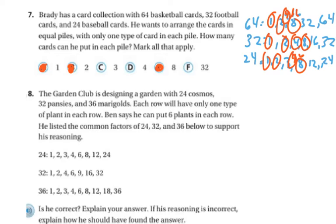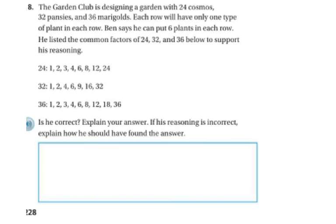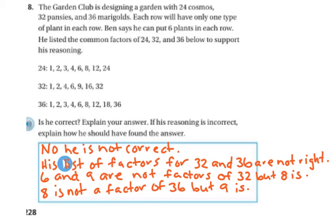The Garden Club is designing a garden with 24 cosmos, 32 pansies, and 36 marigolds. Each row will only have 1 type of plant. Ben says that he can put 6 plants in each row. He lists the common factors of 24, 32, and 36 below to support his reasoning. Is he correct? Explain your answer. If his reasoning is incorrect, explain how he should have found the answer.